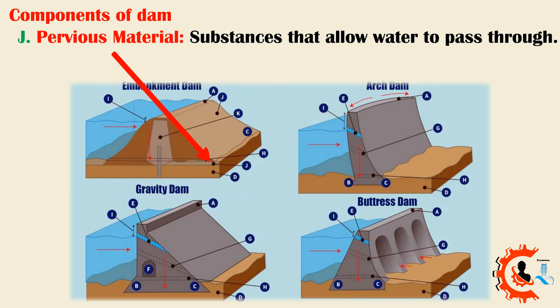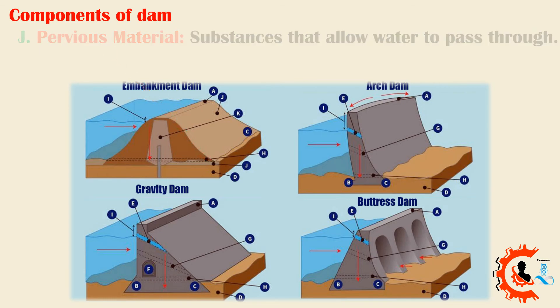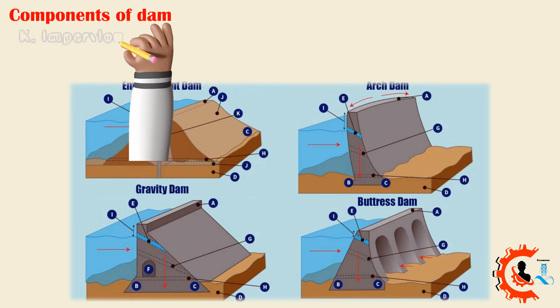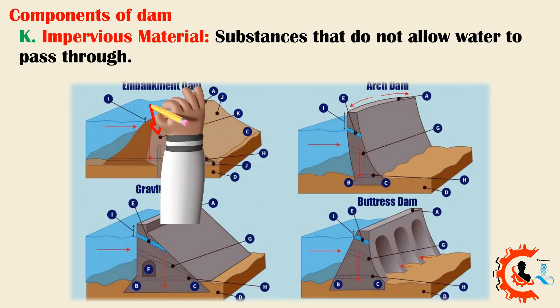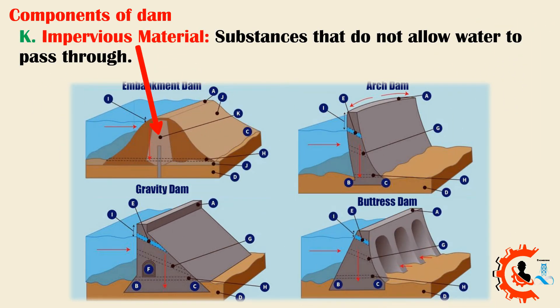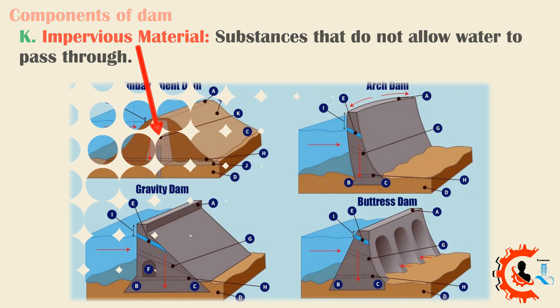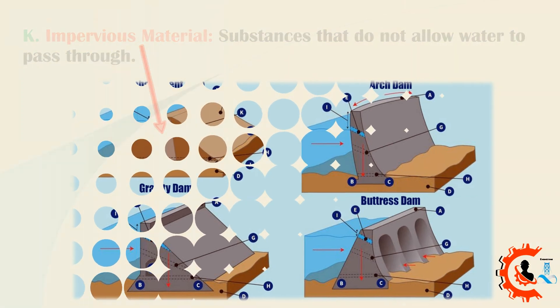J. Pervious material — substances that allow water to pass through. K. Impervious material — substances that do not allow water to pass through.